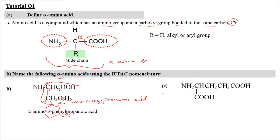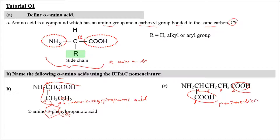For part E, we have another structure. We start numbering from the carboxyl group because it has priority. So the numbering goes 1, 2, 3, 4, and 5 — giving a 5-carbon longest chain, which is pentane. Here we have 2 carboxyl groups, so instead of pentanoic acid, it becomes pentanedioic acid, where 'di' refers to 2 carboxyl functional groups.